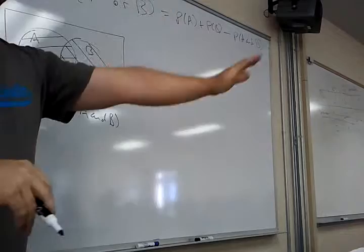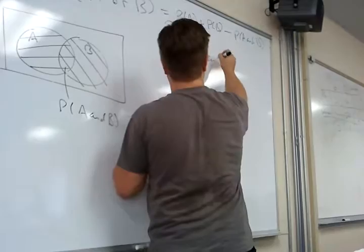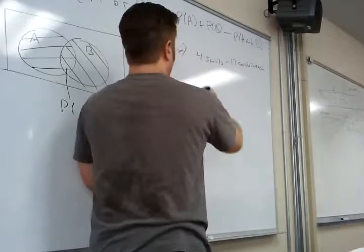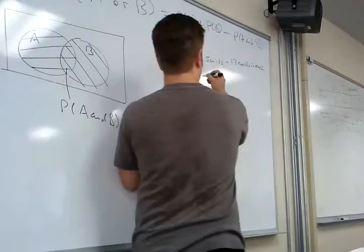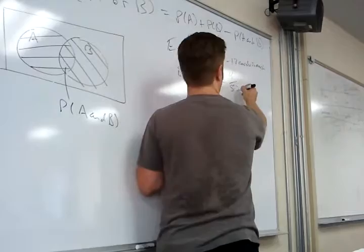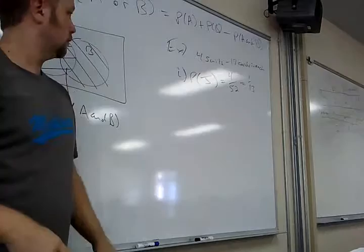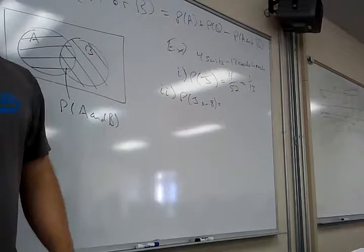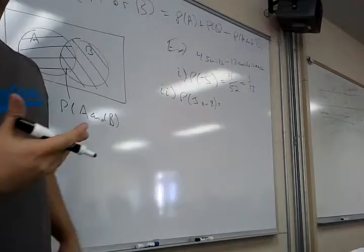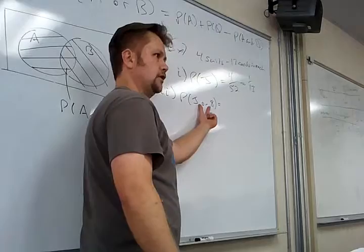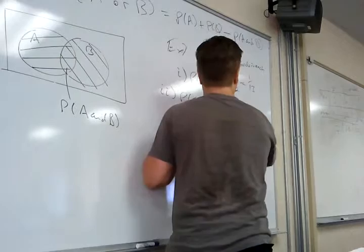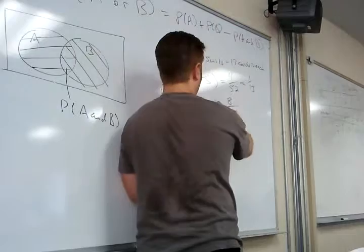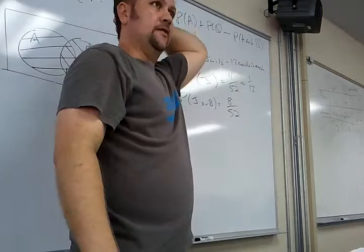Quick follow-up example with cards. What's the probability I pick a jack? Four jacks out of 52 total cards — one out of 13. What's the probability I pick a jack or an eight? There are four jacks, four eights — eight things total out of 52. OR is basically add. What's the probability I pick a jack or a club? Four jacks plus thirteen clubs — but if I do that, what's wrong? I added the jack of clubs twice.